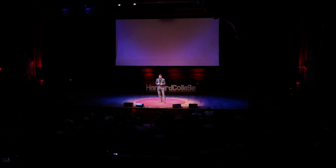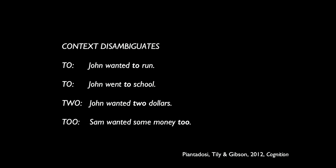For example: 'John went to the store,' 'John wanted to run,' 'John wanted two dollars,' or 'Sam wanted some money too' — it's disambiguated entirely by the preceding and following context. The same is true for long sentences in a newspaper. When you read those sentences, they're completely disambiguated by local context. So Chomsky's idea that communication wouldn't be a good explanation for language does not go through, because language is actually unambiguous in context. So we can pursue the idea that maybe language evolved for communication.